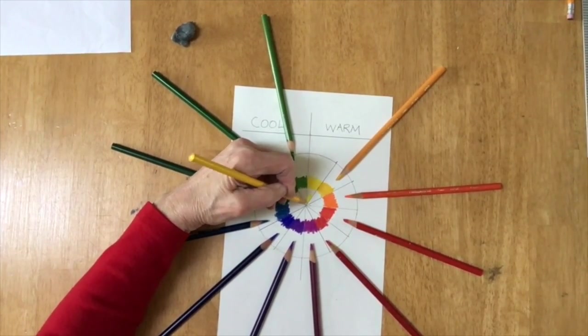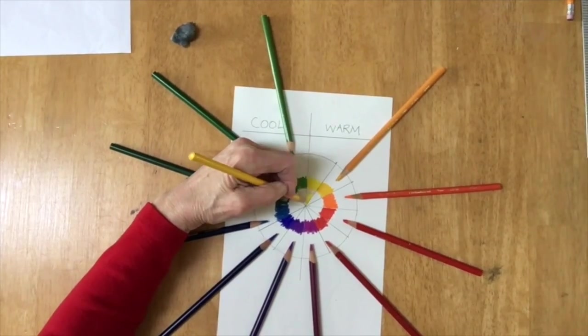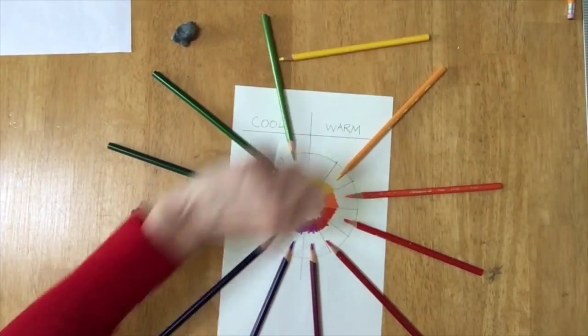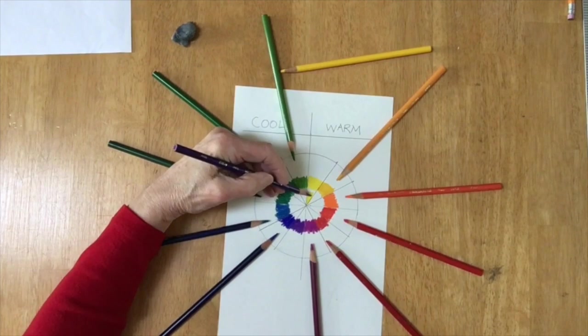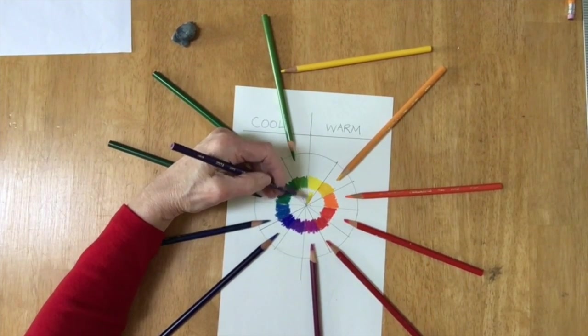What I want to show you, which I find one of the most important things about information on the color wheel, are the complementary colors. The complementary colors are those opposite each other on the color wheel.